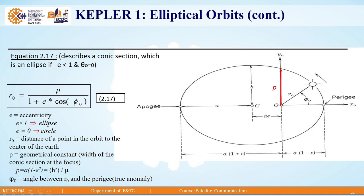Moving back towards Kepler's first law. We have the equation r₀ = P/(1 + E·cos φ₀). E is the eccentricity. If eccentricity is less than 1, then the orbit is elliptical. If eccentricity is exactly 0, then the orbit is circular.